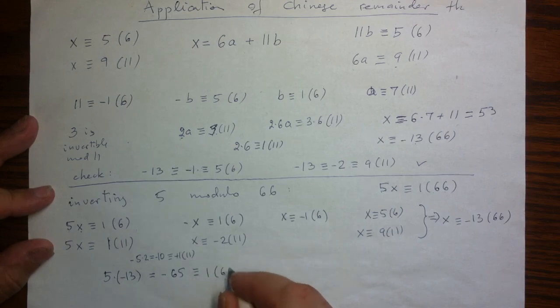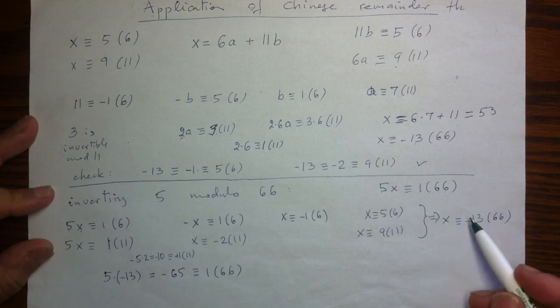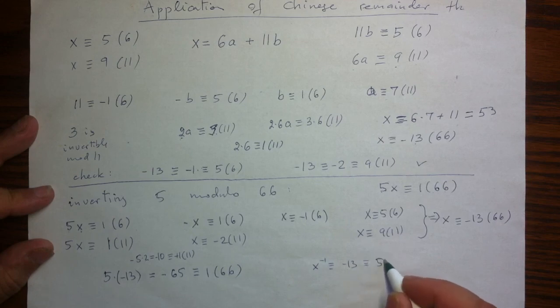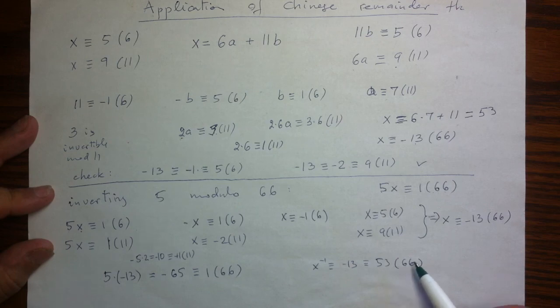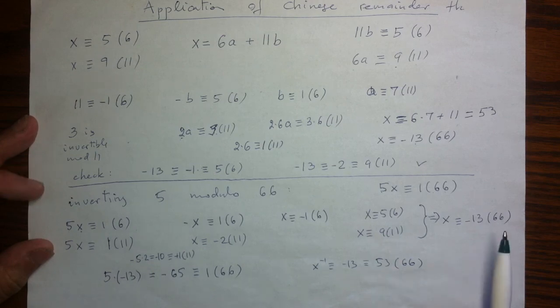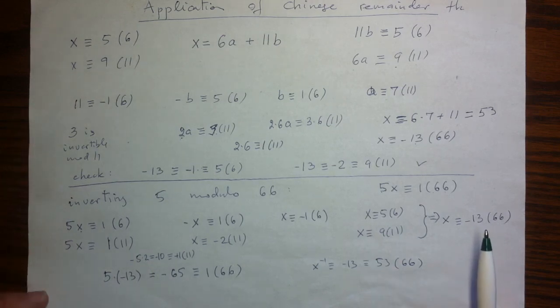So that is it. We verified that x inverse is negative 13, which is the same as 53 mod 66. 53 is another acceptable answer, but the invertibility property will be more involved computationally. So that's why negatives are quite good sometimes. I'll see you later with another application. Thank you.